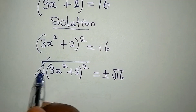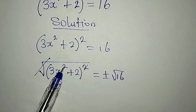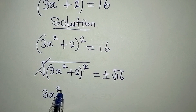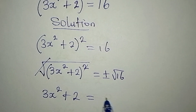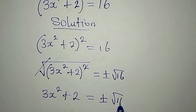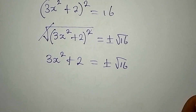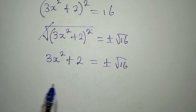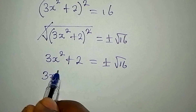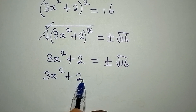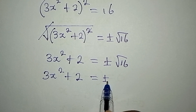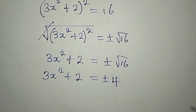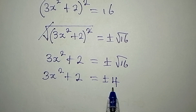The square root and the square cancel each other out. Remember, the expression inside is not affected. So we have 3x squared plus 2 equal to plus or minus square root of 16. Now, 16 is a perfect square, so 3x squared plus 2 is equal to plus or minus 4.